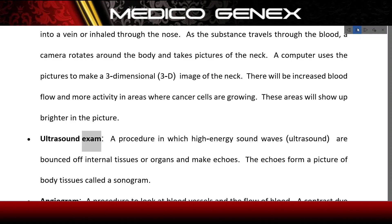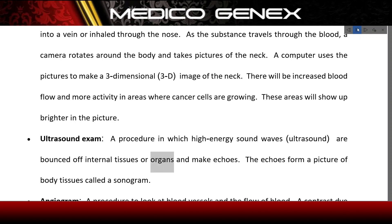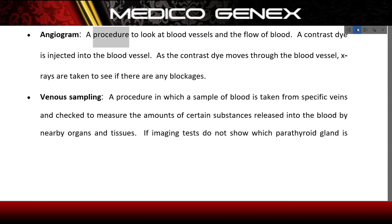Ultrasound exam: a procedure in which high-energy sound waves (ultrasound) are bounced off internal tissues or organs and make echoes. The echoes form a picture of body tissues called a sonogram. Angiogram: a procedure to look at blood vessels and the flow of blood. A contrast dye is injected into the blood vessel, and as it moves through, x-rays are taken to see if there are any blockages.